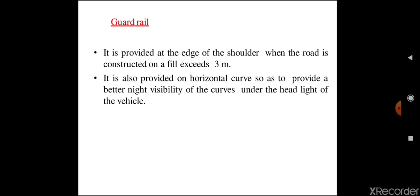Next element is guard rail. It is provided at the edges of the shoulder when the road is constructed on a fill exceeding 3 meters. Guard rails serve to prevent the vehicle from running out of the embankment, especially when the height of fill is more than 3 meters. Guard stones painted in alternate black and white are usually used — they also give better visibility of curves at night under the headlights of vehicles. The main function is to prevent vehicles from running out from the pavement.